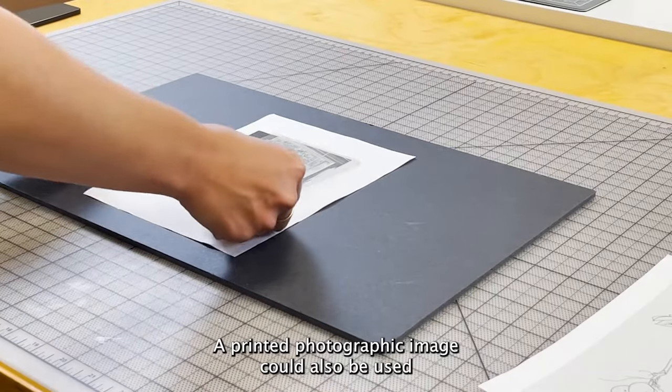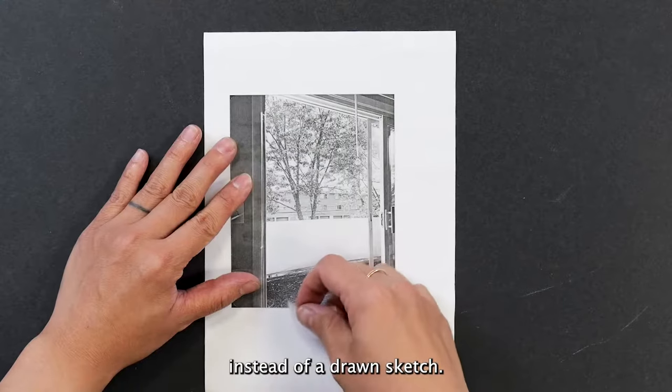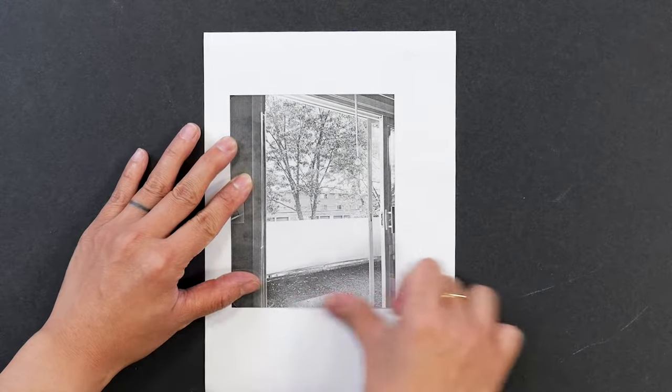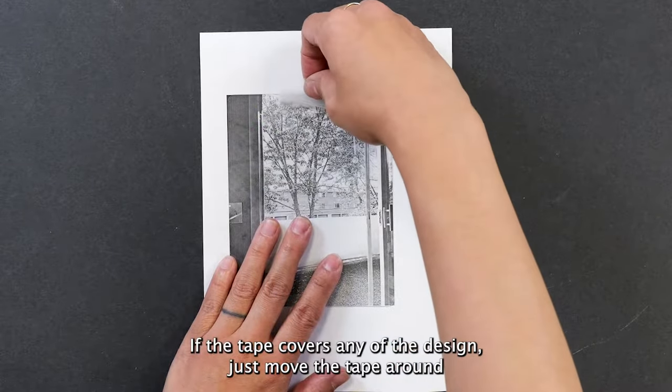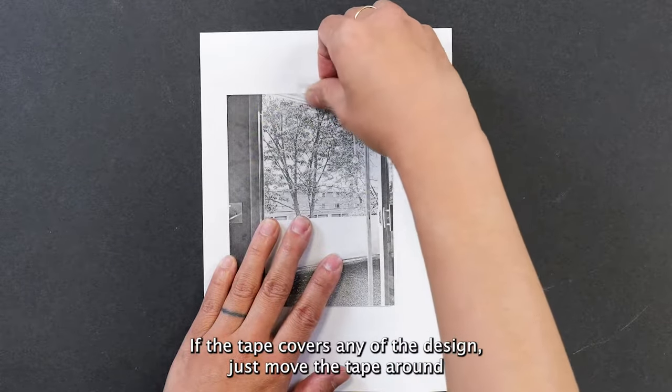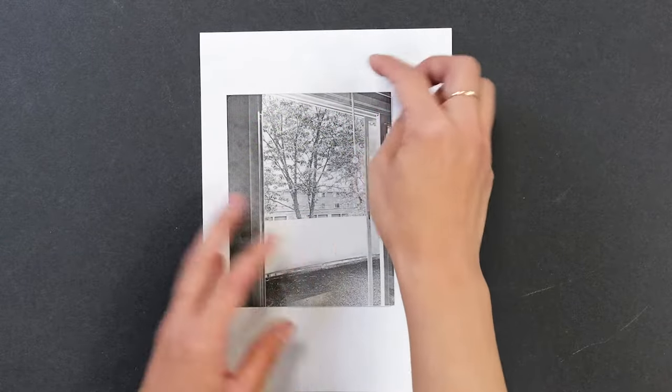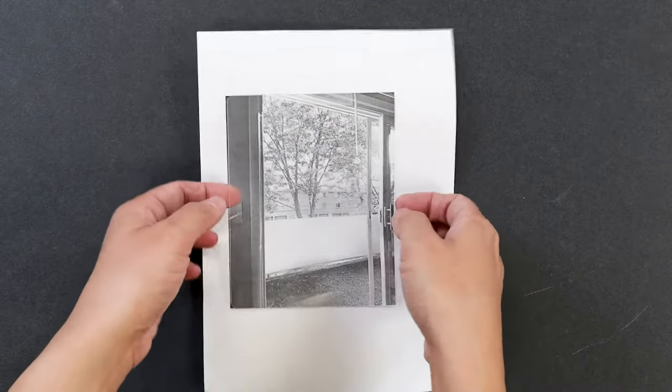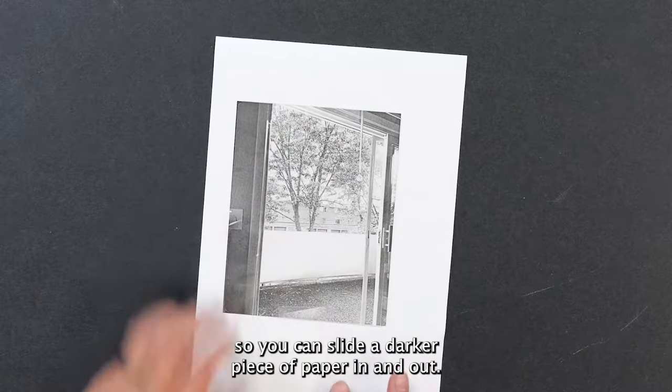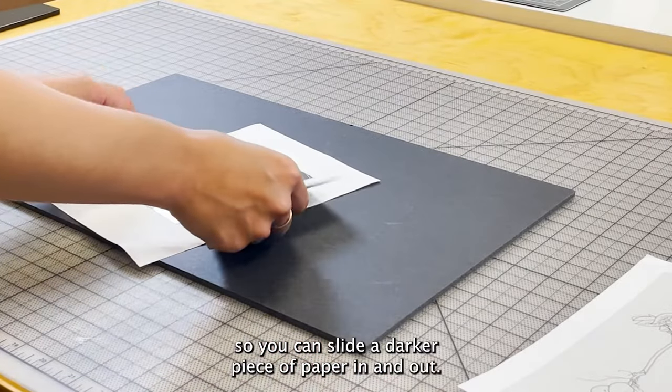A printed photographic image could also be used instead of a drawn sketch. If the tape covers any of the design, just move the tape around to another position. Keep the sides open so you can slide a darker piece of paper in and out.